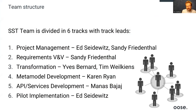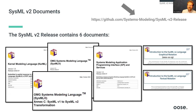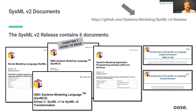Such a large team needs structure. There are six different tracks for different aspects, with track leads. I co-lead, together with Yves Barnard from Airbus, the track working on the transformation from SysML v1 to SysML v2. Anyone can view the current state of SysML v2 on GitHub. Besides the pilot implementation, there are mainly six specification documents, though they're hard to read. Chapter 7 in the SysML v2 specification is very readable and explains the language concepts — a good starting point.